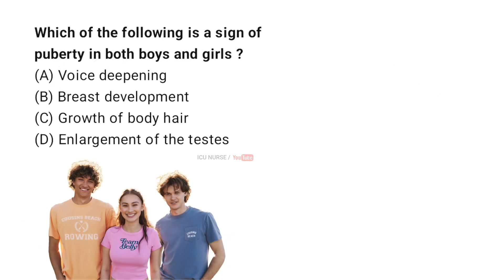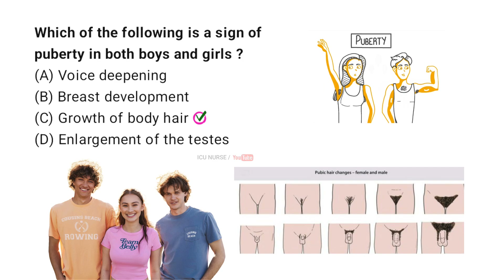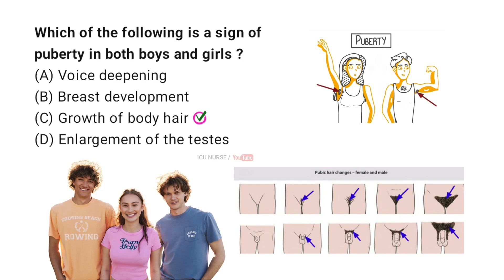Which of the following is a sign of puberty in both boys and girls? A: Voice deepening, B: Breast development, C: Growth of body hair, D: Enlargement of the testes. The correct answer is C: Growth of body hair. The growth of body hair, particularly in pubic and underarm areas, is a common sign of puberty in both boys and girls, due to the increase in sex hormones like testosterone and estrogen.